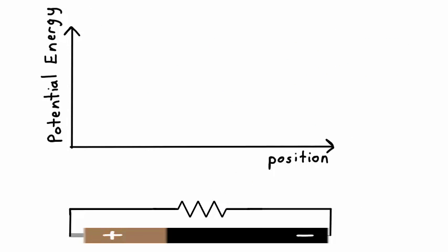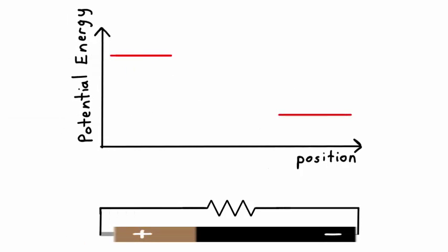Let's look at another example. What would happen to the energy of charges if they travel through a resistor as shown in the diagram? The charges start at the positive terminal with very high potential energy and they end at the negative terminal with very low potential energy. So they must have lost their potential energy when they moved through the resistor. In this case the energy is converted into heat and so the resistor heats up.